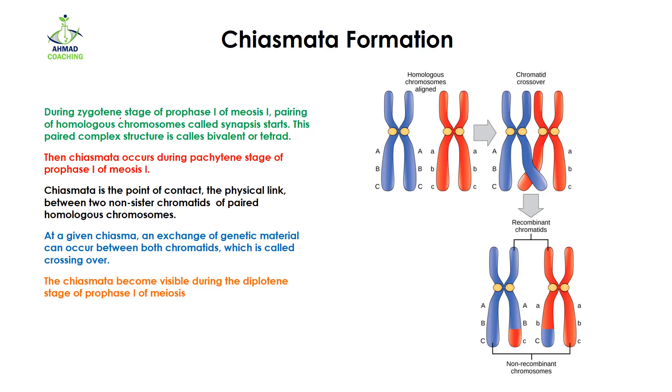First of all, during the zygotene stage of prophase 1 of meiosis 1, pairing of homologous chromosomes called synapsis starts. Chiasmata occurs in meiosis 1, and we know that there are two stages of meiosis: meiosis 1 and meiosis 2. Chiasmata will occur in meiosis 1 during the prophase 1 stage. Prophase is further divided into different stages, and in the zygotene stage of prophase 1, we can see that things are settling down so that Chiasmata can take place.